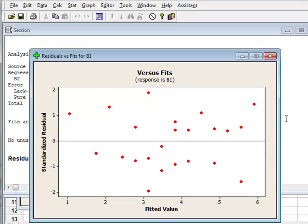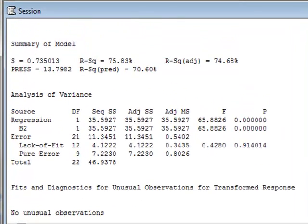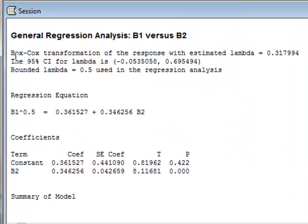If we now look at the numerical results, we see that the Box-Cox transformation has estimated lambda to be 0.31799 but that it will take the rounded value of 0.5 for use in the regression analysis.